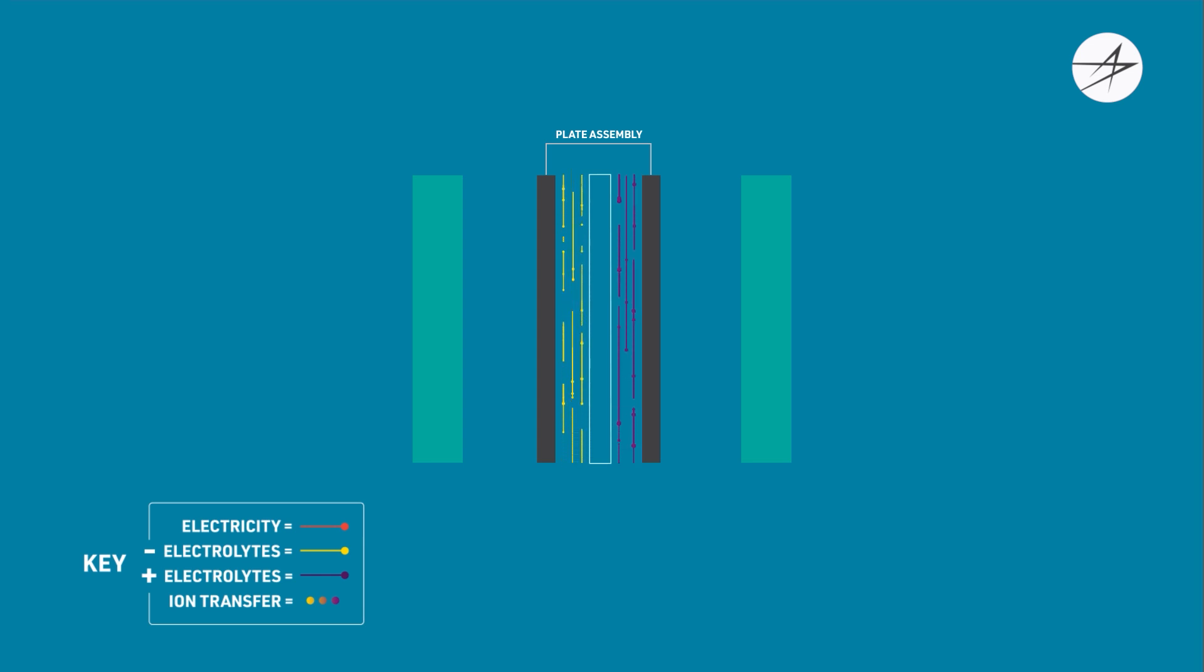As the electrolytes flow through the battery stacks, ions are transferred across a membrane. The electrons are stored in the electrolyte as this ion transfer takes place, increasing the state of charge of the battery.